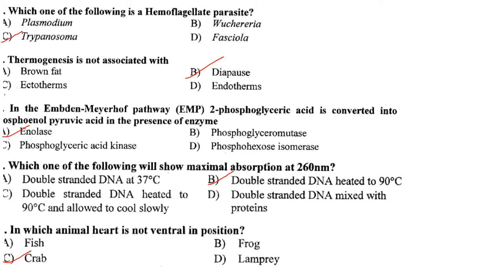Thermogenesis is not associated with diapause. Diapause is a state of dormancy in growth and development in response to changes in environmental conditions, with reduced activity including reduced feeding and reproductive development, mostly seen in insects such as arthropods. Thermogenesis is the dissipation of energy through production of heat, occurring in brown adipose tissue and skeletal muscles. Answer is option B — diapause.